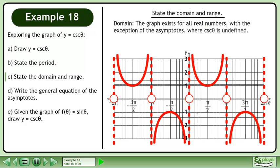The graph exists for all real numbers, with the exception of the asymptotes where cosecant theta is undefined. The domain is theta belongs to the set of real numbers, with the restriction that theta cannot equal n pi, where n belongs to the set of integers.